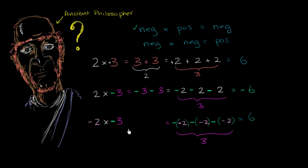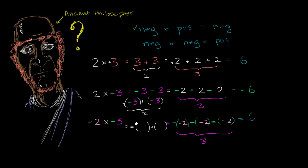You can use the same logic from the other direction. In the 2 times negative 3 example, we added negative 3 two times. Now, since we have a negative 2, we're going to subtract negative 3 twice instead of adding it. So we subtract something and subtract something again — and that something is negative 3. Subtracting a negative is like taking away someone's debt, which is essentially giving them money. So this is the same as 3 plus 3, which is once again 6.